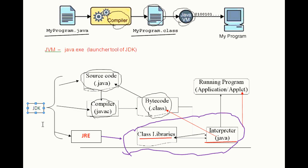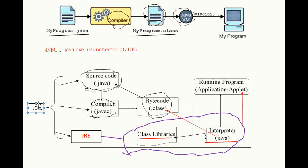The next one is JDK, the Java Development Kit. JDK contains development tools needed to develop your Java programs and JRE to run your Java programs. The tools include Java Compiler, Java Application Launcher, Applet Viewer, etc. JDK is mainly targeted for Java development. By using JDK, you can create, compile and run your Java programs.